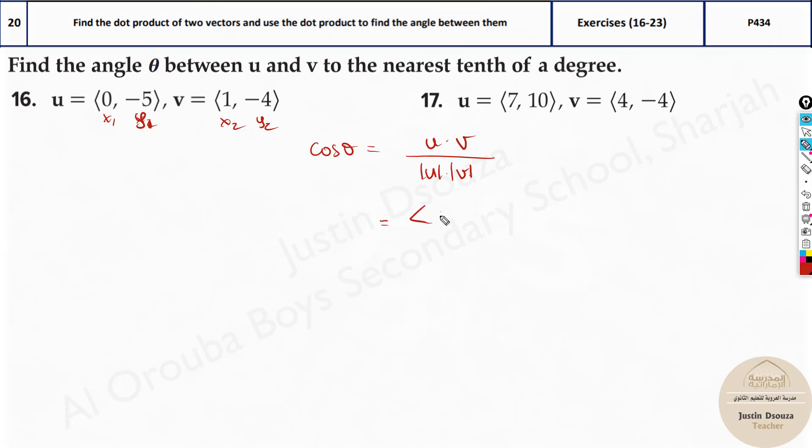Let's write it as it is: 0 comma -5 dot product of 1 comma -4 divided by, how do we write the magnitude? Magnitude is given as square root x squared plus y squared. This is it. You just have to substitute the given value.